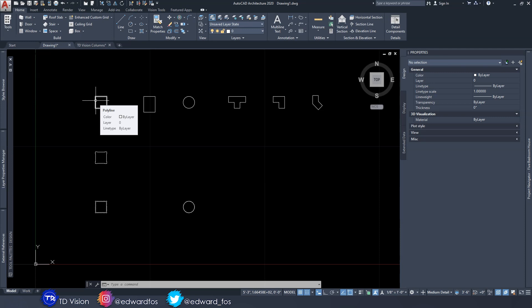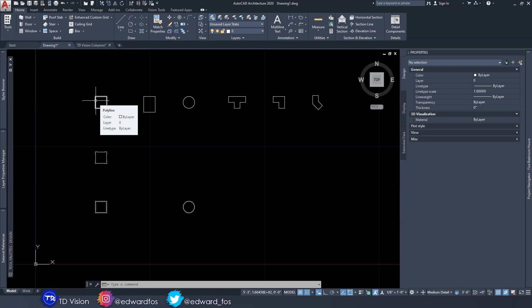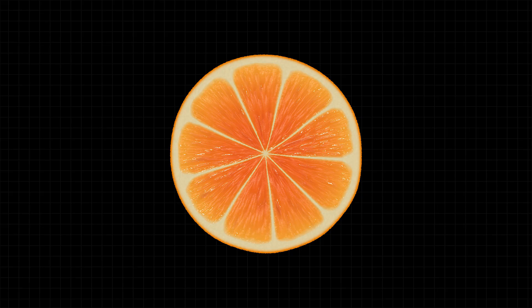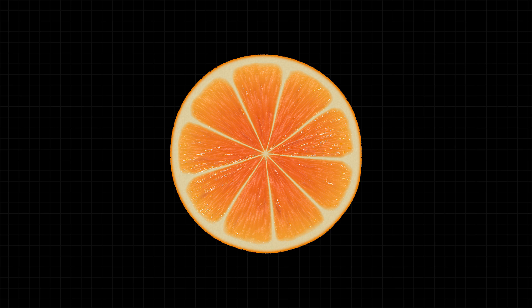When we talk about profile, we're simply referring to the shape of the column when you slice it in the middle — another term for that would be 'truncate.' Just like an orange or a cucumber: you slice it in the middle, and there you have the profile of that fruit.